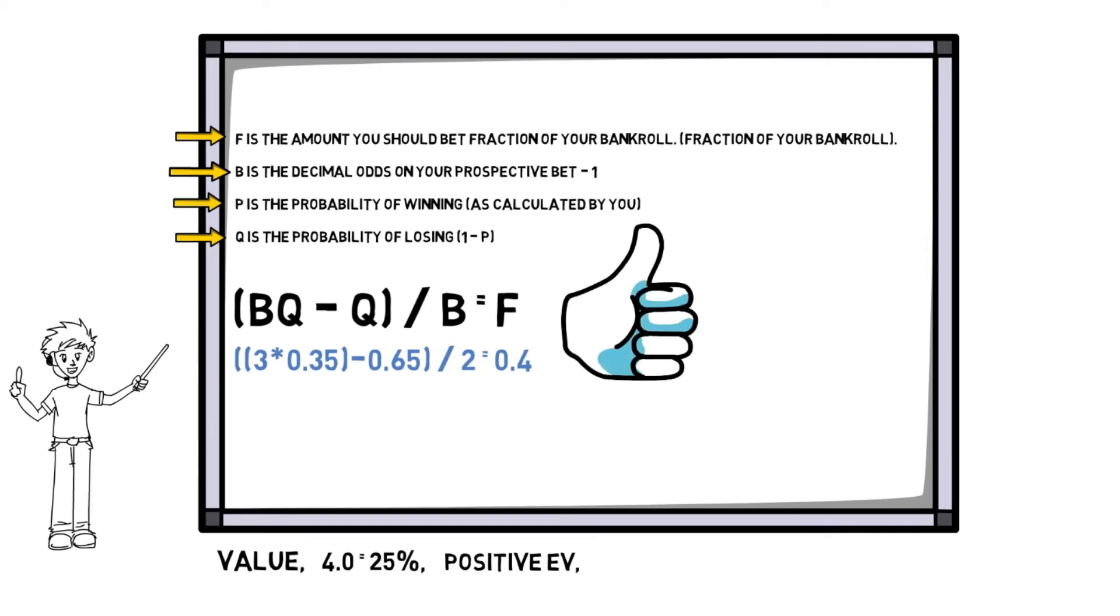In the instance above, the reaction to the Kelly Criterion formula is a positive number. This communicates to you that you have perceived a bet with value. On the off chance that the response was a negative number, this will show that the wager didn't have a positive expected value, or EV.